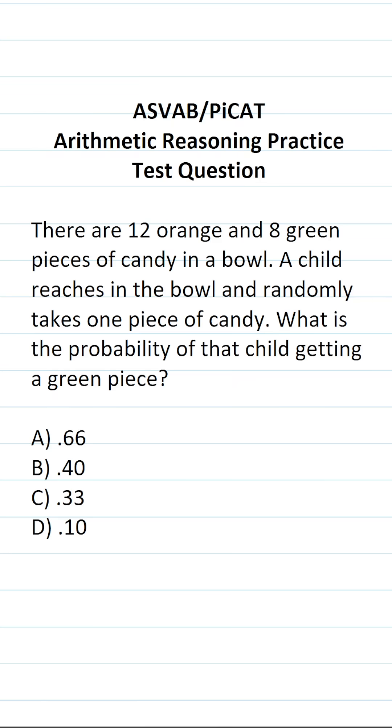This arithmetic reasoning practice test question for the ASVAB and PiCAT says there are 12 orange and 8 green pieces of candy in a bowl. A child reaches in the bowl and randomly takes one piece of candy. What is the probability of that child getting a green piece?